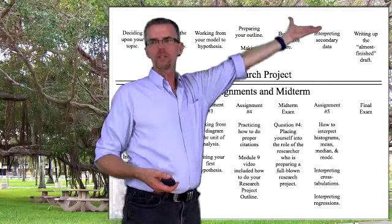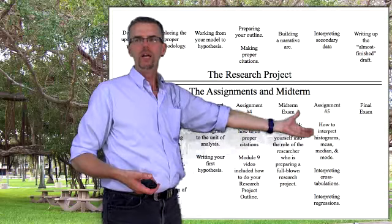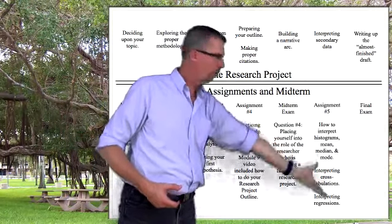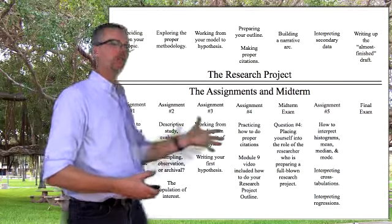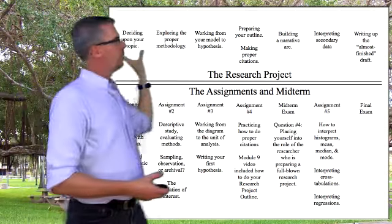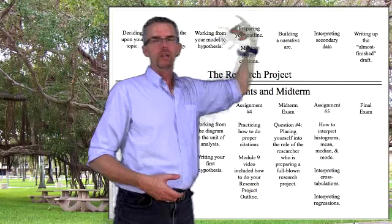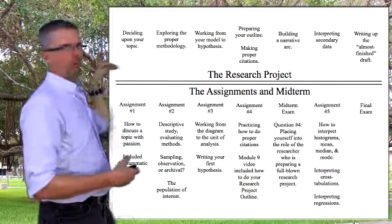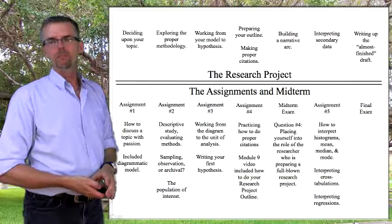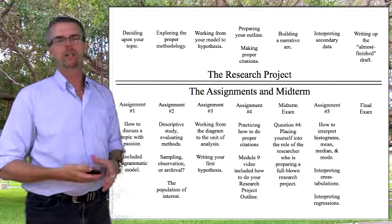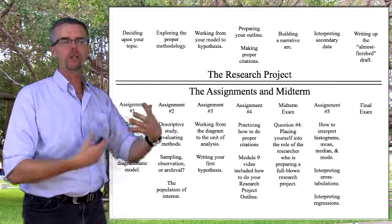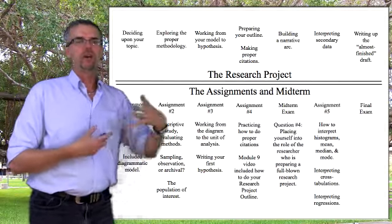Assignment 5 was about how to interpret secondary data. Now we're at the point of writing your almost-finished draft, and after that you'll write the final exam incorporating all of this. Everything on the chart here is fair game for the final exam. But you'll have the opportunity to finish your research project first. There is a firewall between your research project and all of the assignments, but we're going to return to midterm question 4 to show you how to build a narrative arc into your research project.